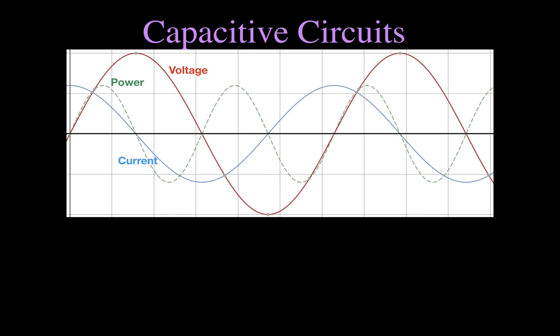We're going to be doing that using this graph, which shows the relationship between the voltage, represented by this red waveform, the current, represented by this blue waveform, and the power, represented by this dashed green line waveform.